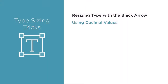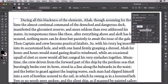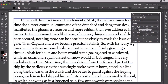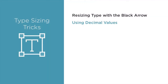The font size and any other measurement field accepts partial values as well as whole values. You aren't limited to sizing type in whole points. You can enter decimal values to the second decimal place, the hundredths, and precisely size type. Just enter 12.5 or 11.75. This can be a lifesaver when one size is too small but the next whole value point size up causes the text to no longer fit the space you need it to fit.